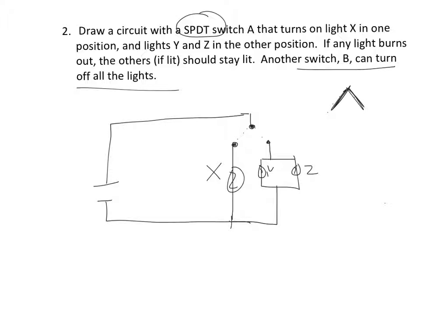And another switch B can turn off all the lights. I'll add a switch here at the beginning that can affect everything. It'll shut the power off if needed. I should probably erase this extra line. There we go, there's switch B.